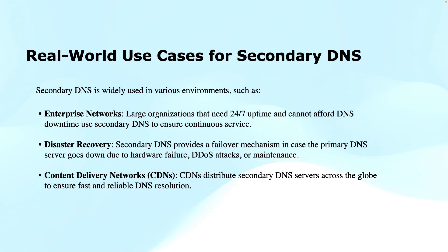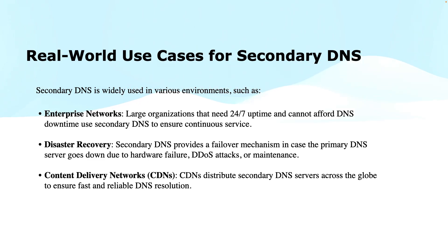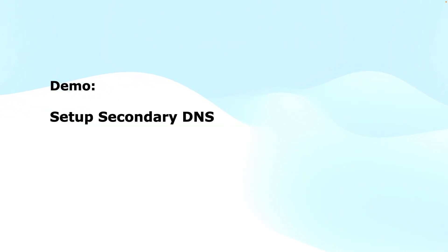Real-world use cases for secondary DNS servers: enterprise networks — large organizations need 24/7 uptime for their services. Disaster recovery — secondary DNS provides a failover mechanism in case the primary DNS server goes down due to hardware failure, DDoS attacks, or maintenance. Content delivery networks (CDNs) use secondary DNS servers distributed across the globe to ensure fast and reliable DNS resolution.